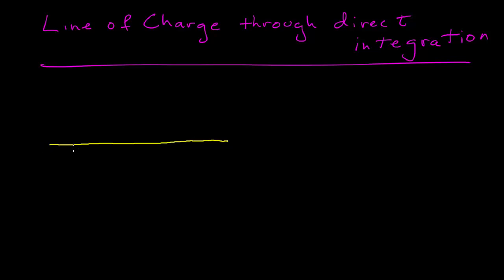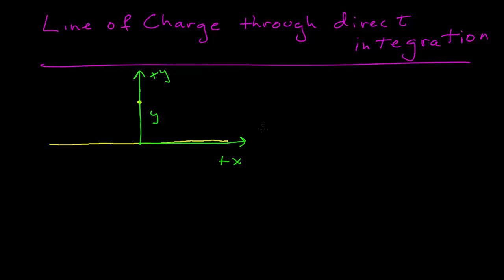I want to know what the electric field is some distance away from the charge. I'm going to set up a coordinate system with the x-axis along my line of charge. The fixed point that I'm interested in is some distance y — I'll put the positive y-axis through here. It's important to remember throughout that this y is a constant; we're looking for some arbitrary but fixed point above the x-axis along which lies my infinite line of charge.